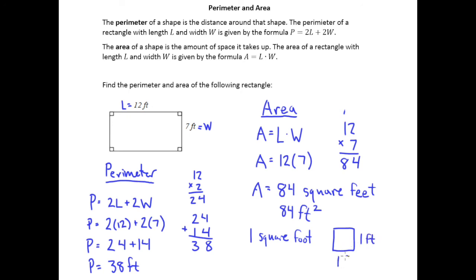And so when we say that our area is 84 square feet, what we're saying is that 84 of these little squares could fit inside this rectangle. That's literally what 84 square feet means.